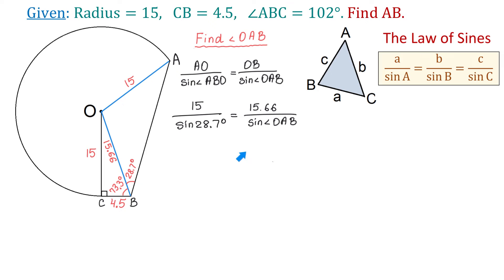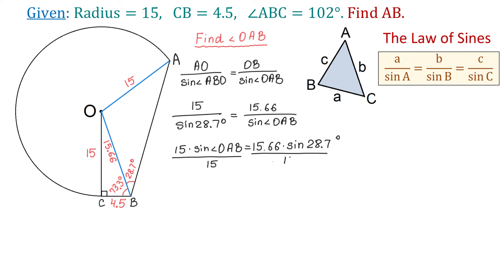Now we solve this equation using cross-multiplication: 15 multiplied by sine of angle OAB equals 15.66 multiplied by sine of 28.7 degrees. We then divide both sides by 15, so that 15 cancels on the left side. To find angle OAB, we take the inverse sine of the right side: angle OAB equals sine inverse of (15.66 multiplied by sine of 28.7 degrees, divided by 15).